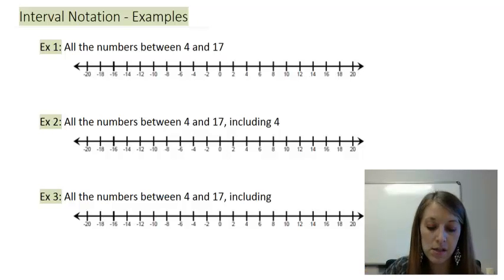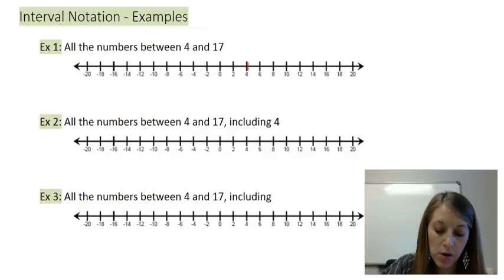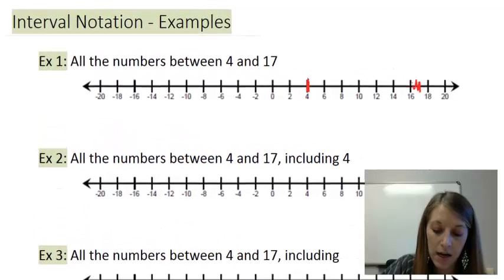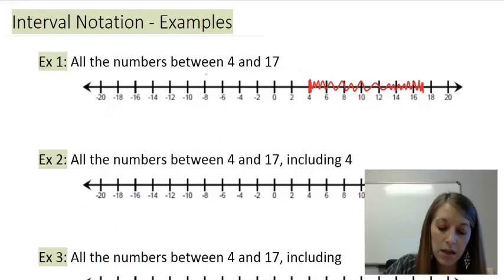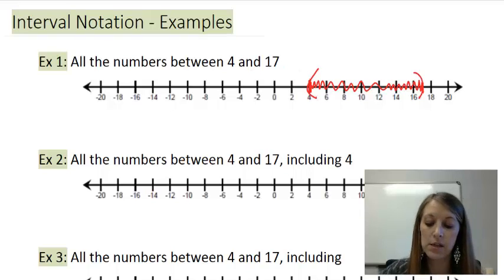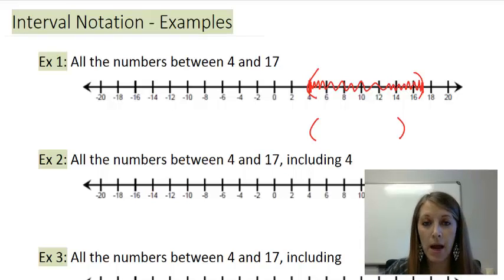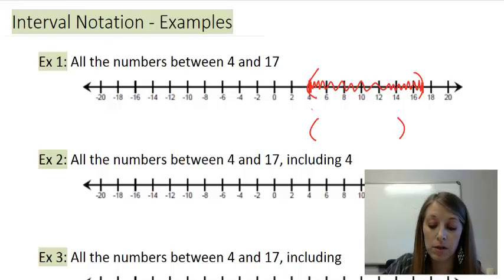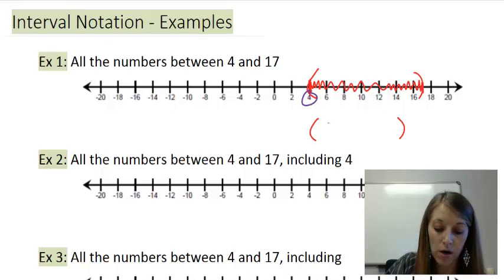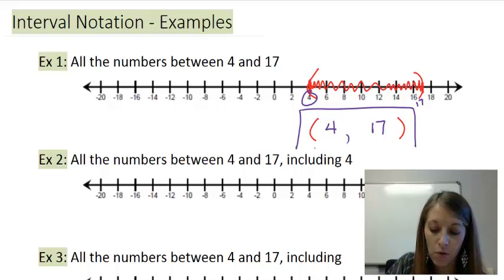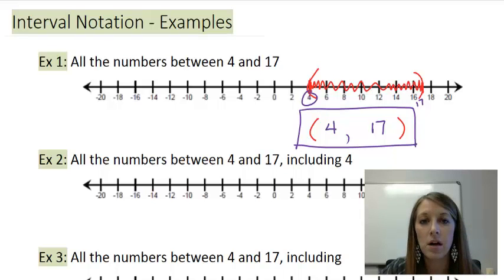So very quickly, let me re-graph these. All the numbers between 4 and 17. So I find 4 and 17. I shade all the numbers in between. This one is not including, so I have parentheses on both ends. So my interval notation is going to look almost exactly the same. If I have a parenthesis on the left, then I'm going to have a parenthesis on the left. I have a parenthesis on the right, so I'm going to have a parenthesis on my right. Now I need to do the numbers. Remember, the smallest number, which here is 4 on the left, comma, the largest number, which is 17 here on my right. So my interval notation is (4, 17) with parentheses on both sides.